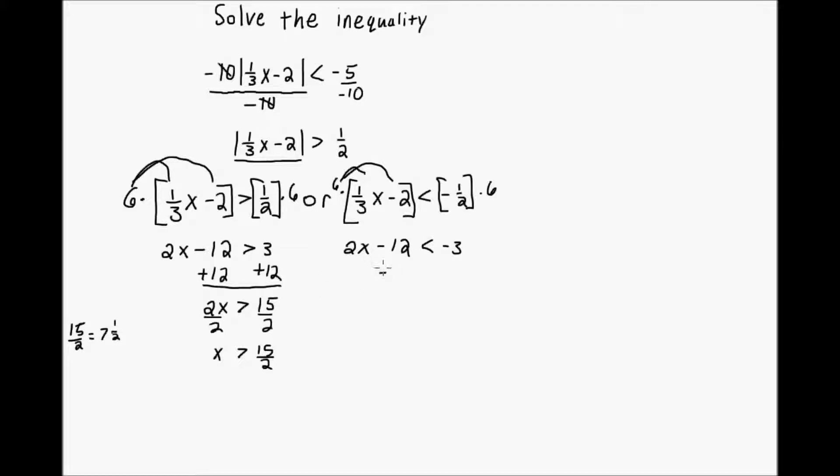Same steps as over here. I'm still going to add 12 and divide by 2. So, this time instead of positive 3 plus 12, I'm going to have negative 3 plus 12. So, I'll have 2x is less than 9. And now, I just divide both sides by 2.